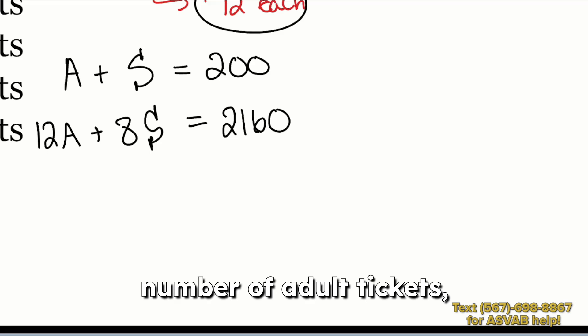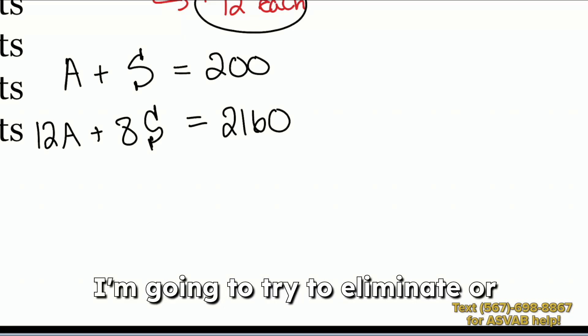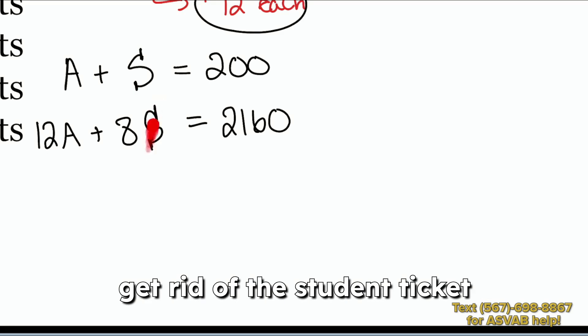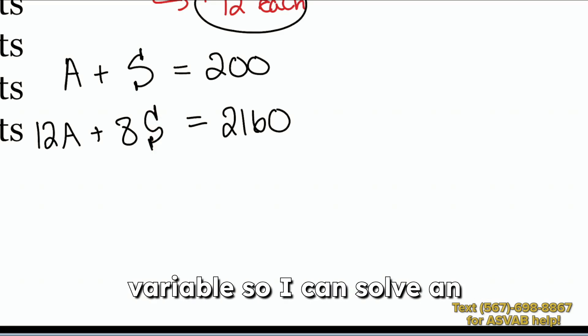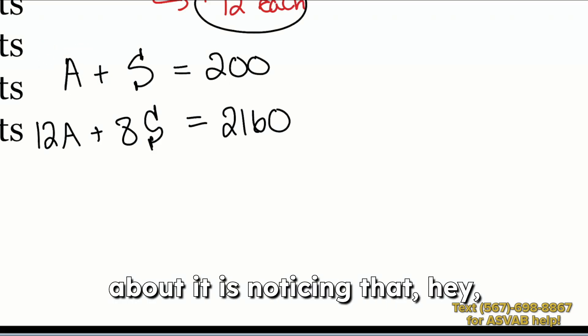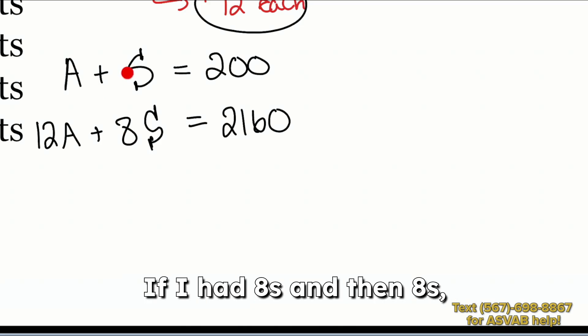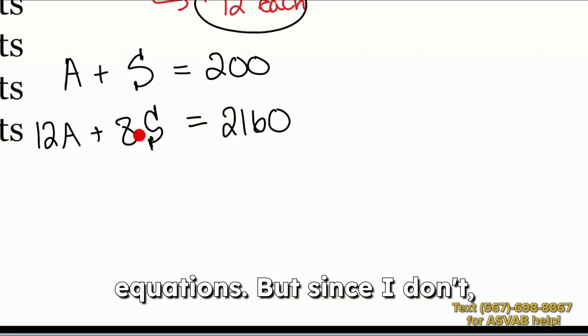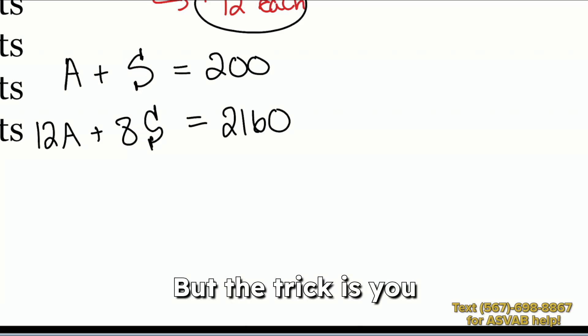So here's how we can get this done. Since we're looking for the number of adult tickets, I'm going to use this technique called elimination. I'm going to try to eliminate or get rid of the student ticket variable so I can solve an equation that just has the adult tickets. The way that I'm going to go about it is noticing that, hey, if I had 8S and then 8S, I could subtract these equations. But since I don't, I can't. But the trick is you can get it there.